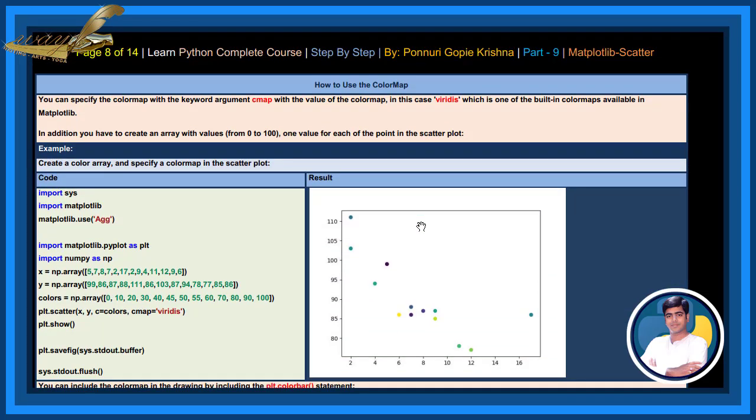How to use the color map? You can specify the color map with the keyword argument cmap. The value of the color map in this case, viridis, which is one of the built-in color maps available in matplotlib. In addition, you have to create an array with values from 0 to 100, one value for each of the points in the scatter plot.